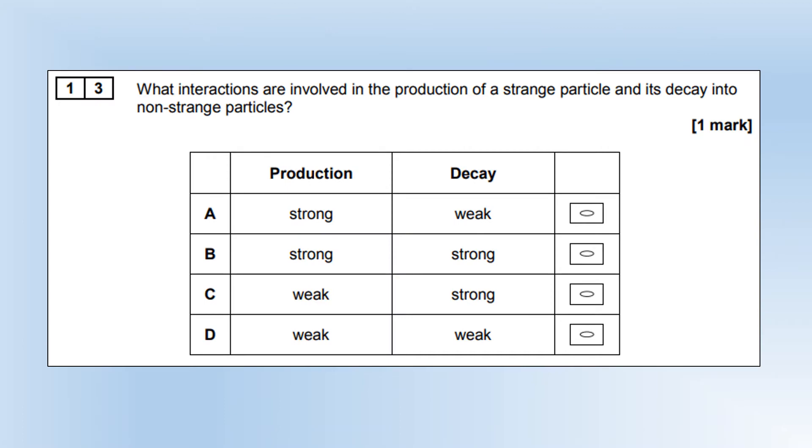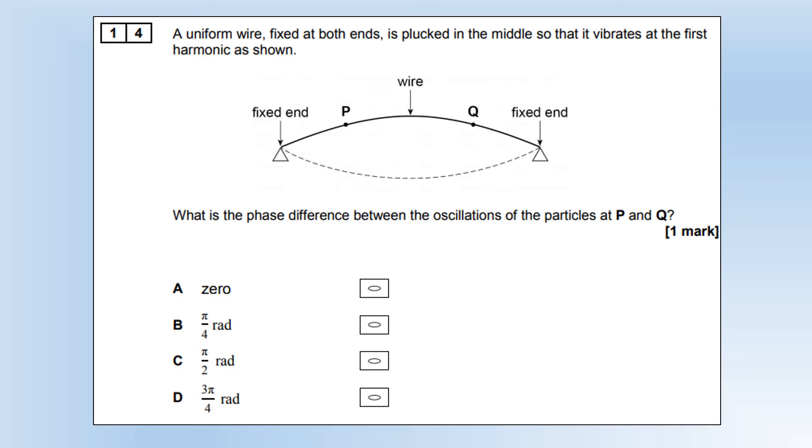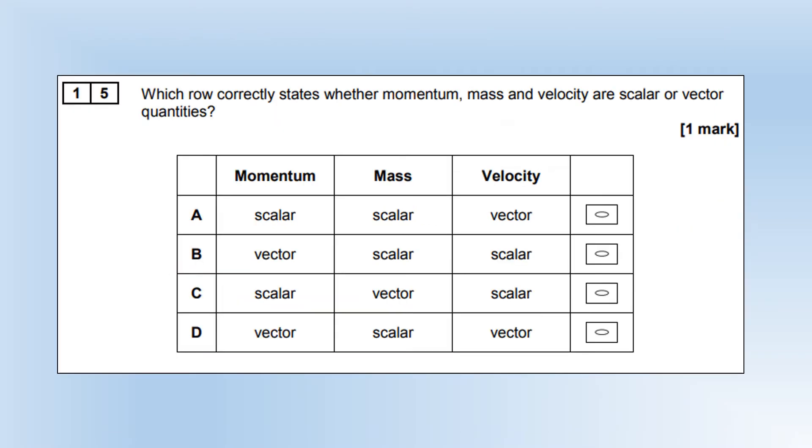What interactions are involved in the production of strange particle and its decay into a non-strange particle? Strange particles are produced during strong interaction, and they decay through weak, so we clearly want option A. A uniform wire, fixed at both ends, is plucked in the middle, so it vibrates at the first harmonic. What is the phase difference between the oscillations of P and Q? None whatsoever. They're in phase with each other.